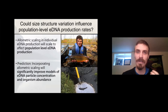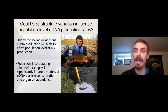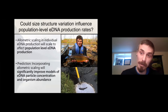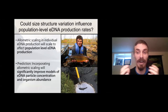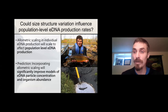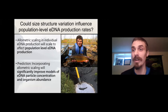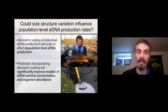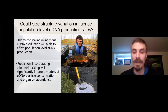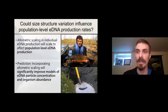This is really interesting because when you start thinking about this at a population level, it's very possible that size structure variation might actually influence population-level eDNA production rates. Size structure variation in natural populations is ubiquitous, both within a population and between populations. These two fish pictured here are both brook trout and both reproducing adult individuals in their respective populations — yet in one population, they tend to be on average orders of magnitude larger than in the other. We further developed a hypothesis that allometric scaling in individual eDNA production will scale to affect population-level eDNA production, particularly when substantial size structure variation occurs.